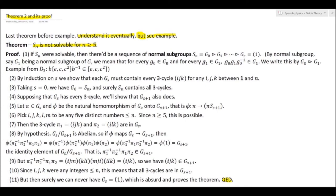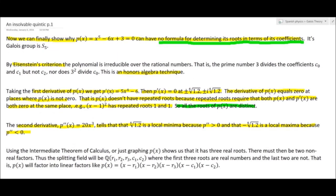Go back and review the definition of what a solvable group is. The proof is right here, and I suggest you struggle with it, because this shows you why if you have a group Sₙ with n ≥ 5 and you start trying to build a tower down to the identity, you can't get all the way through. Here's the first quintic that is easy to show can't be solved by any quintic formula: x⁵ − 6x + 3 = 0.